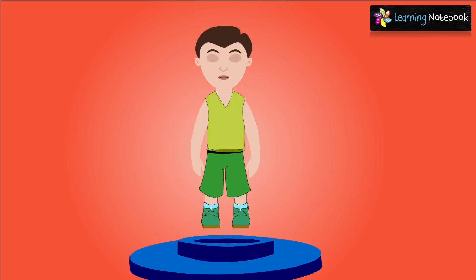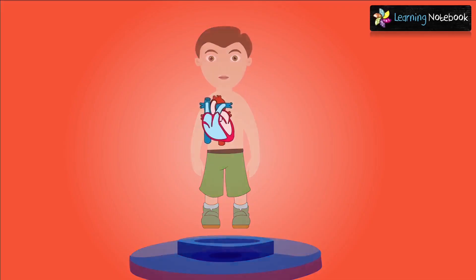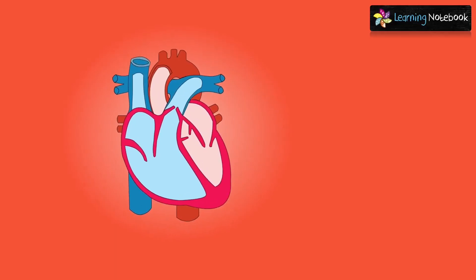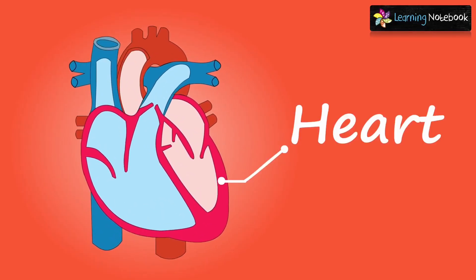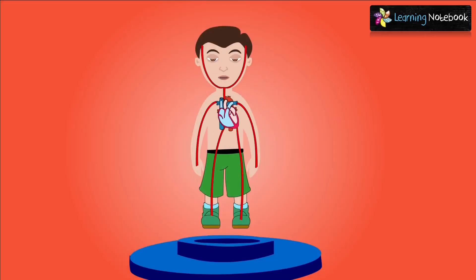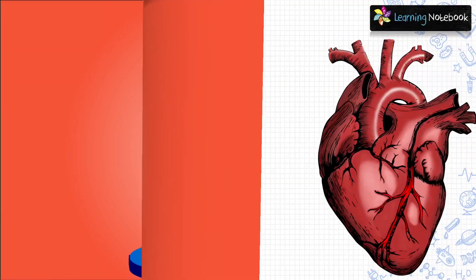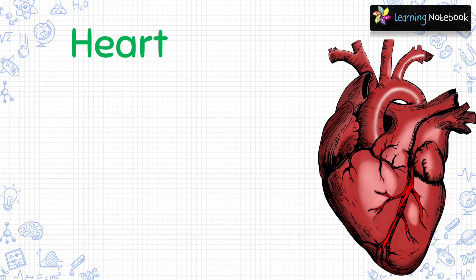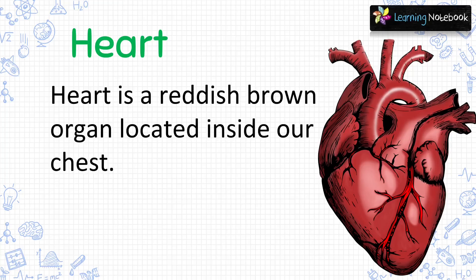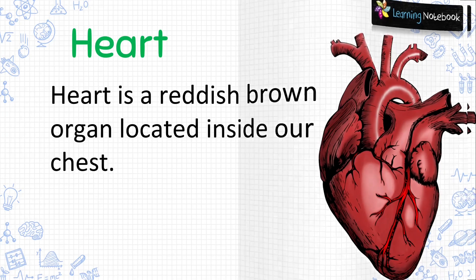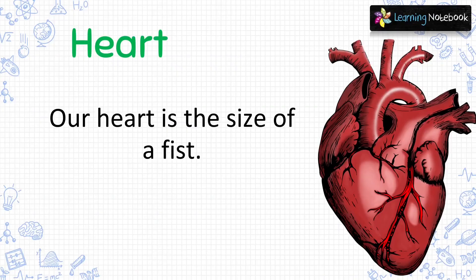Let's see the first internal organ — heart. Let's see where the heart is located in a human body. Heart is a reddish brown organ located inside our chest. It is a muscular organ. Our heart is the size of a fist.